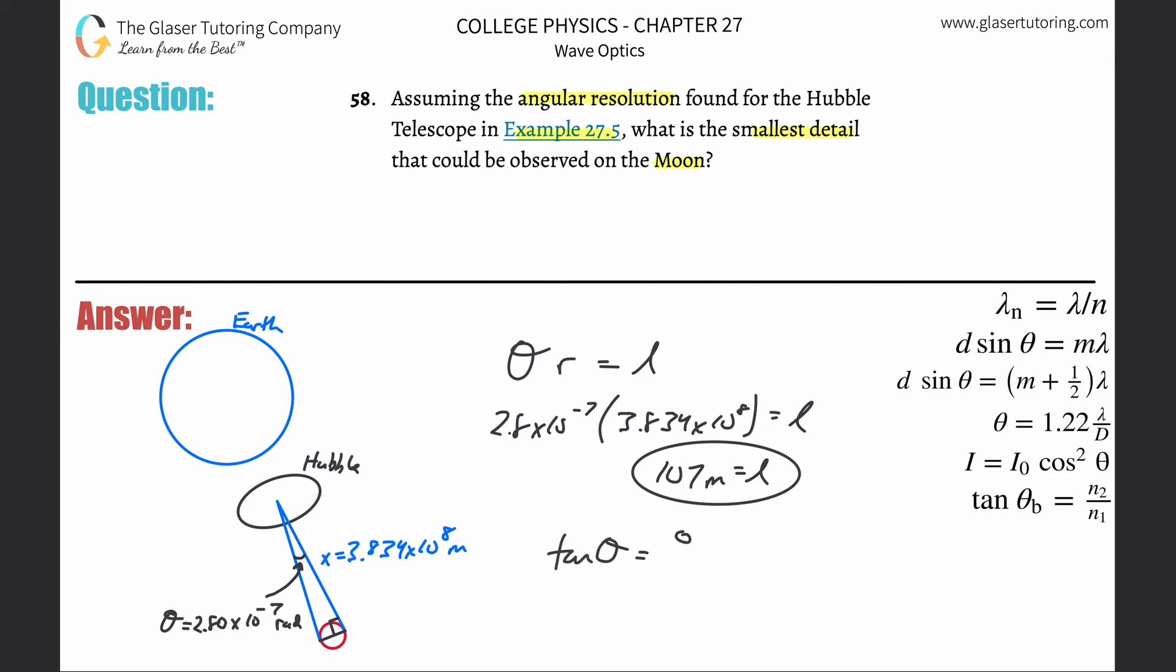Tan of the angle is equal to the opposite side over the adjacent side. The opposite side is what we're looking for, so just simply cross multiply these terms. And this is your now new formula.